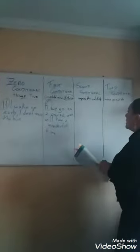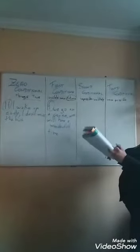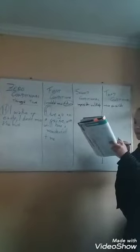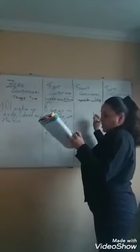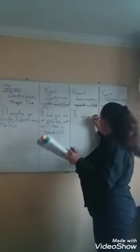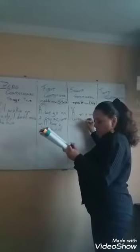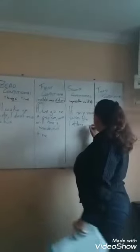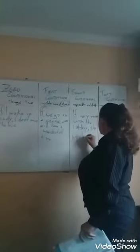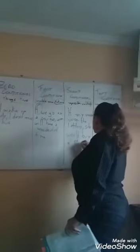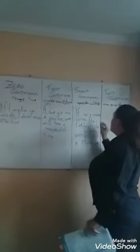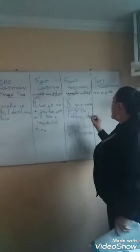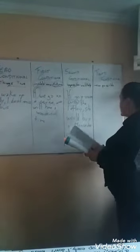What is the second conditional? The second conditional is when the thing is impossible or unlikely in the present or in the future. For example, if my mom won the lottery, she would buy a Mercedes. That's why it can be an impossible thing — if my mom won the lottery, she would buy a Mercedes. It can be done in the future.